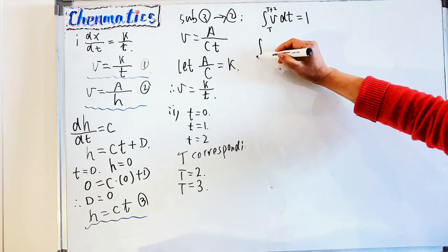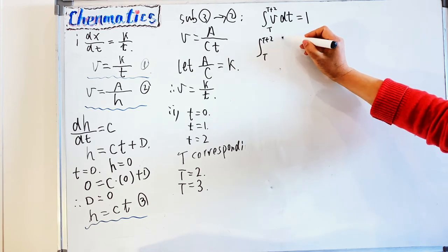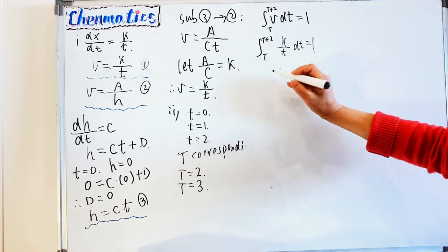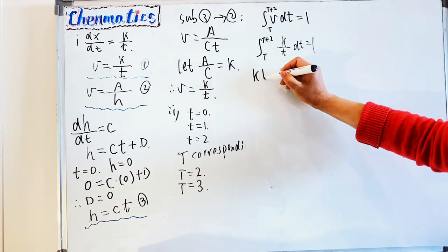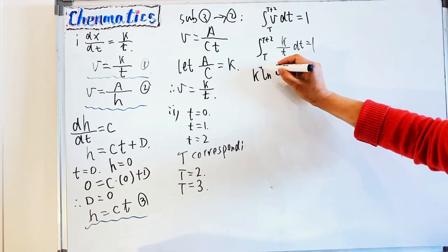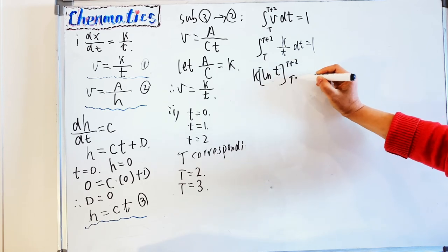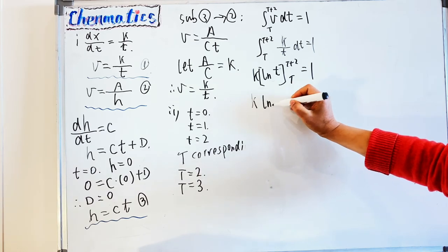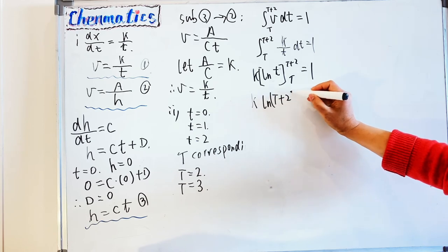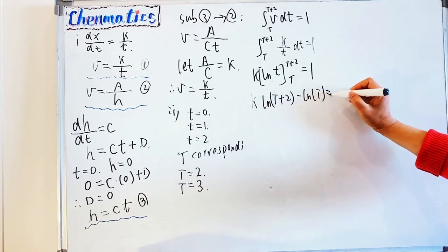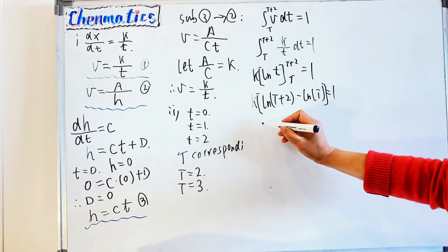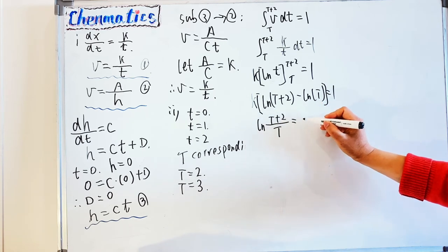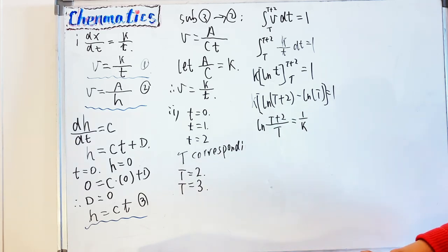So the integral from T to T+2 of k over t dt equals one. Integrating gives k times log t, evaluated with limits T+2 and T, equal to one. This simplifies to k times (log(T+2) minus log T) equals one, and further to log((T+2)/T) equals 1/k. We call this equation A.